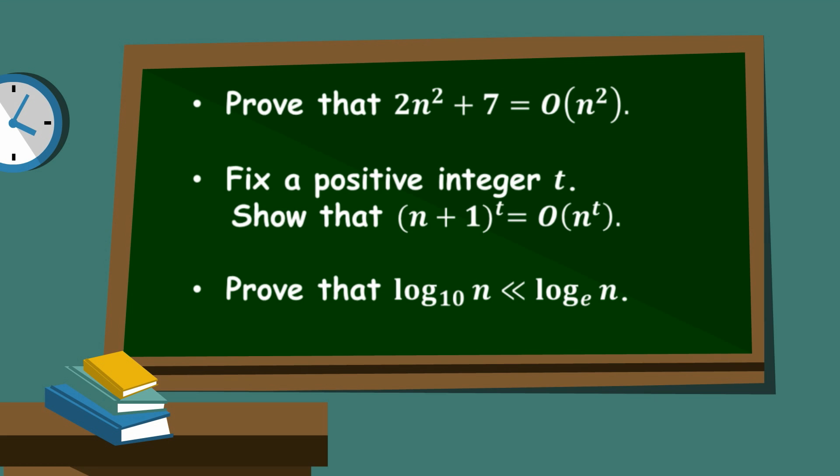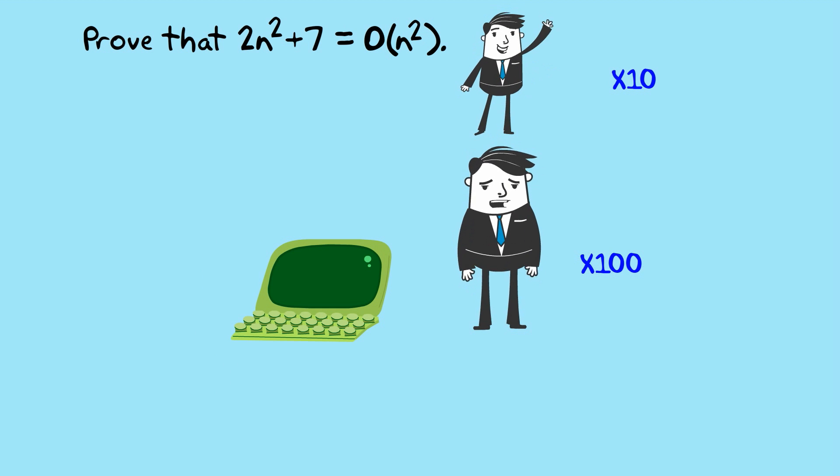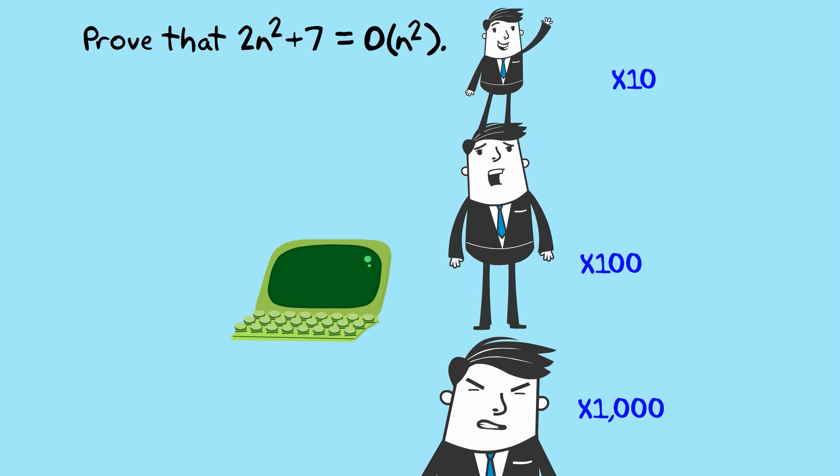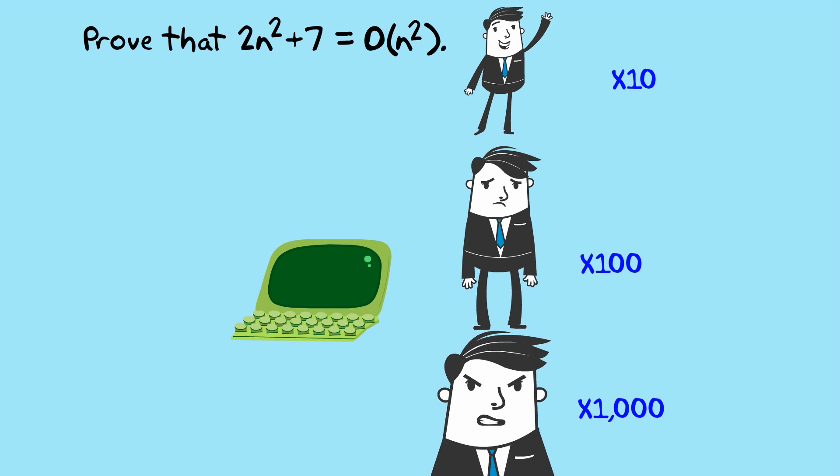You can see big O at work when you use a computer to work on data. However, when you multiply the amount of data by 10, you will notice that sometimes the time taken increases by a factor of about 10, but sometimes it could be a factor of 100 or about 1,000 or maybe even longer, and you get sick of waiting around. So this is what big O is trying to measure.